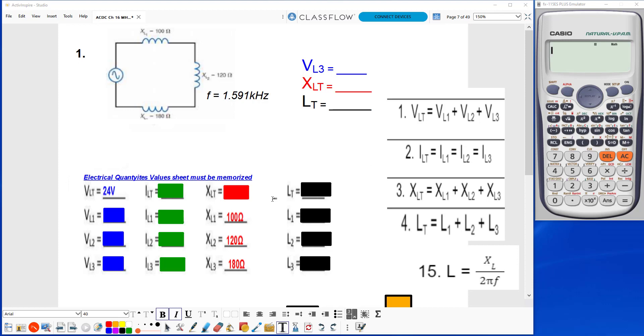Alright so we're going to begin by finding our XLT which we see formula number three here tells us that to find our XLT we need to add all of our XL values together. So 100 plus 120 plus 180 gives me 400 ohms.